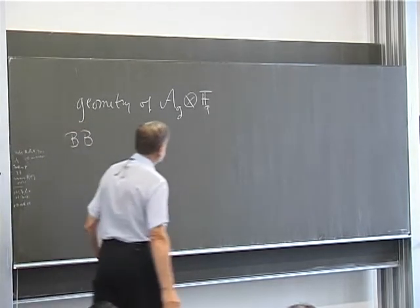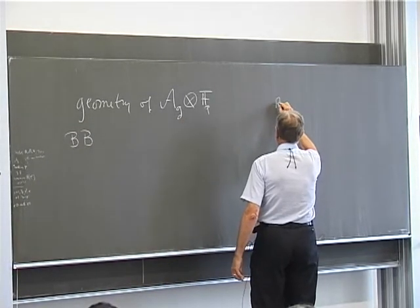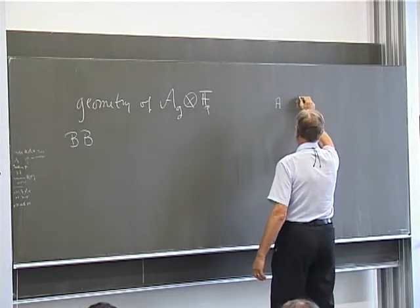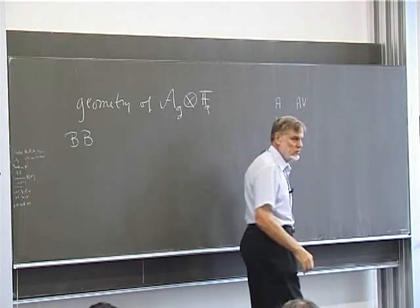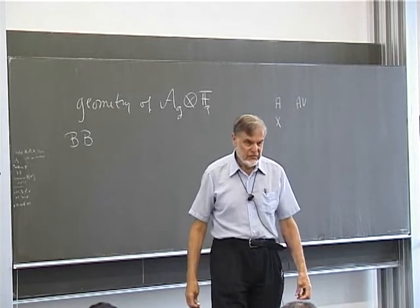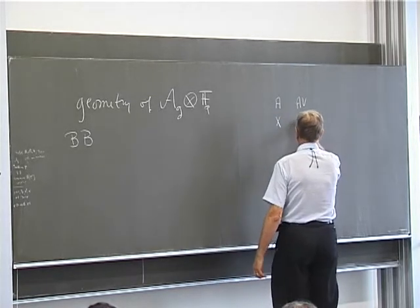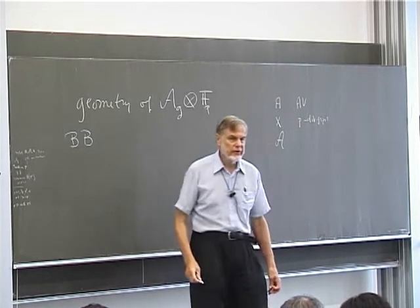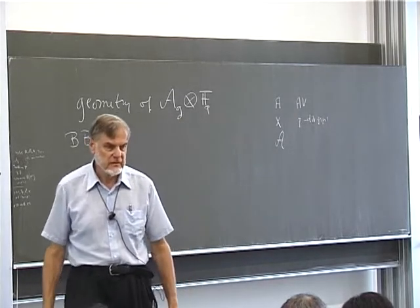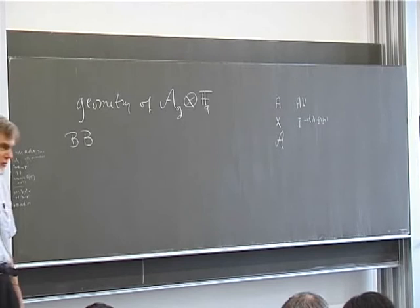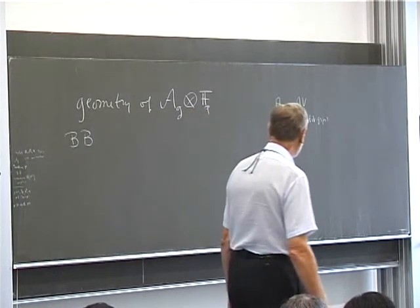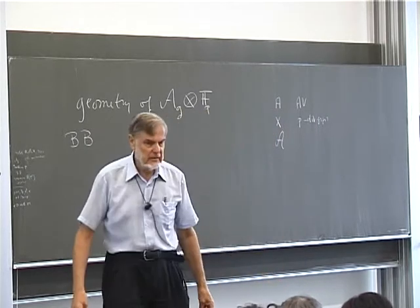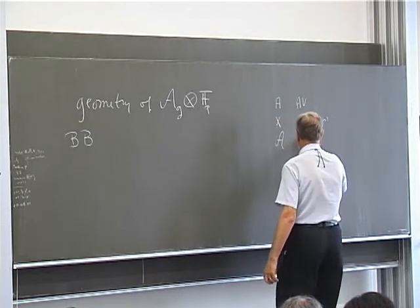Let me first make a remark on notation. We write A, B, C for abelian varieties; we write X, Y, Z for p-divisible groups; and we write script X, Y, Z for moduli spaces. Please make sure to distinguish the abelian variety or abelian scheme from the moduli schemes and moduli spaces.